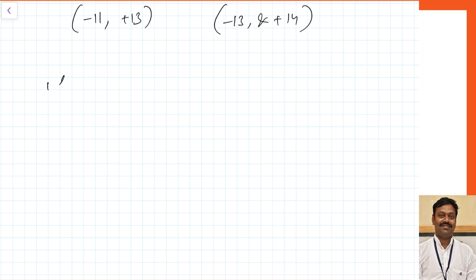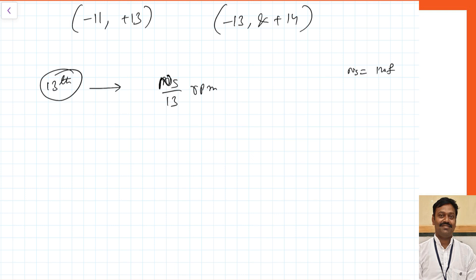Let us assume only the 13th harmonic is present — only 13th harmonic currents are in the rotor. Because of the 13th harmonic currents produced in the rotor, they will rotate at a speed of Ns/13 rpm. We know Ns = 120f/P. For the 13th harmonic, the poles become 13 times, so the synchronous speed of the 13th harmonic becomes Ns/13.